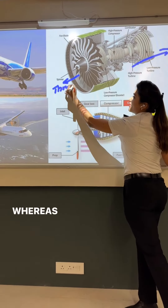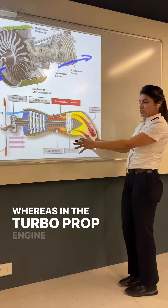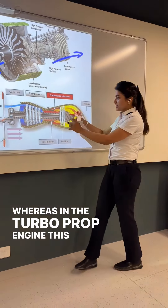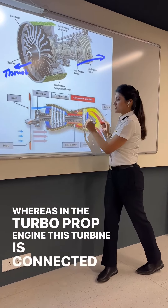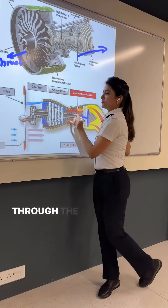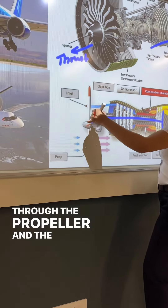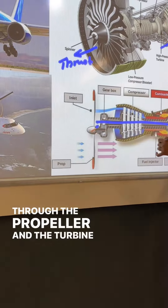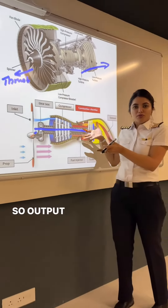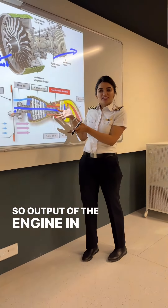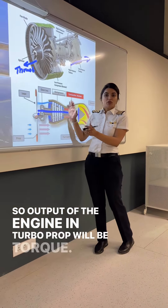Whereas in the turboprop engine, this turbine is connected to the propeller and the turbine rotates the propeller. So the output of the engine in a turboprop will be torque.